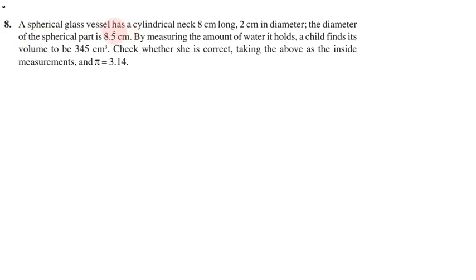A spherical glass vessel has a cylindrical neck 8 cm long and 2 cm in diameter. The diameter of the spherical part is 8.5 cm. By measuring the amount of water it holds, a child finds its volume to be 345 cm³. Check whether she is correct, taking the above as inside measurements.